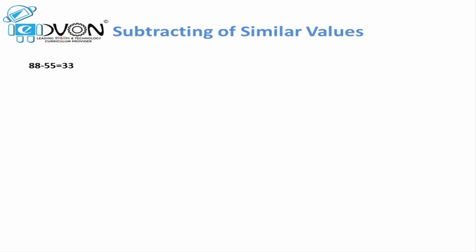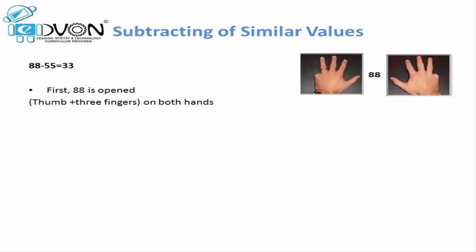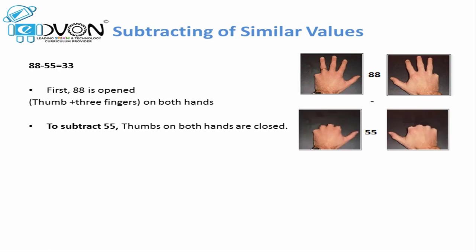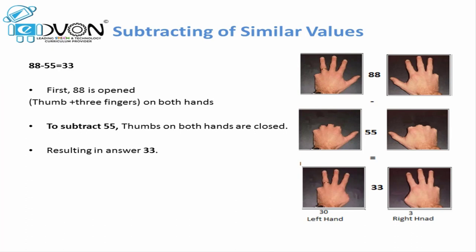Let's take an example for subtraction of similar values. If we want to subtract 55 from 88: first, we place 88, which means opening the thumb and three fingers on both hands. Now to subtract 55, since our thumbs on both hands represent 55, we close the thumbs. As a result, we get three fingers on both hands. So our answer is 33 — 30 on the left and 3 on the right makes 33.